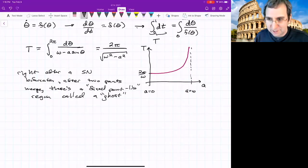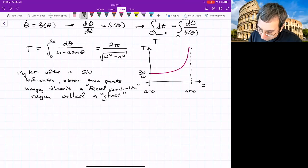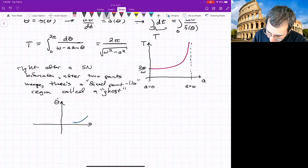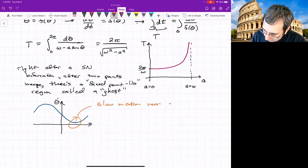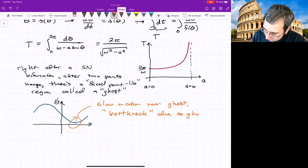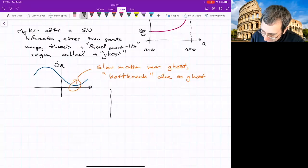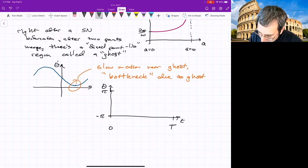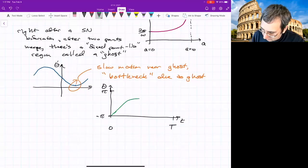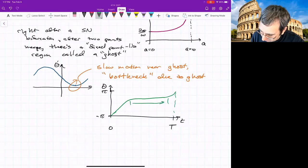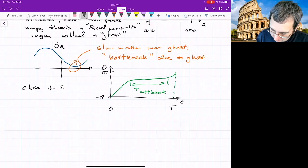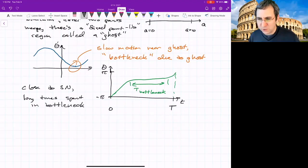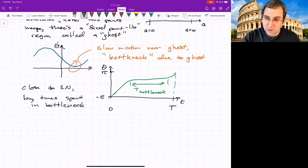If you think of this as right after a saddle node bifurcation, after two points merge, there's a fixed point like region, meaning things are slow, called a ghost. It's the ghost of the fixed points. It's a spooky remnant of what once was on the other side of the bifurcation. So if I plot it like this, like really close, things will move really slowly through this bottleneck or slow motion near ghost. This phenomenon is called a bottleneck due to the ghost. So if we were to look at theta as a function of time, and let's call this the period T, let's think of going from negative pi to pi. Usually theta is increasing at some kind of steady rate, and then it slows to a crawl, and then it goes. This time here would be the time spent in the bottleneck. So close to saddle node, long time spent in the bottleneck. And we'll see this phenomena later when we talk about two-dimensional flows. You can have bottlenecks with flows on the line. That's really all I'm going to say about the circle.